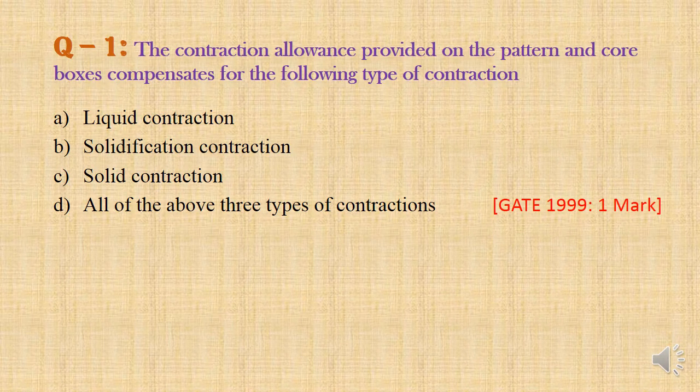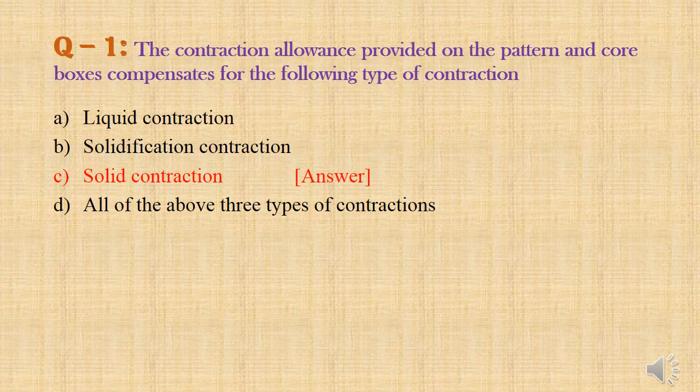Question 1: The contraction allowance provided on the pattern and core boxes compensates for which type of contraction? Option A: liquid contraction. Option B: solidification contraction. Option C: solid contraction. Option D: all of the above. Contraction allowance is the same as shrinkage allowance. Liquid shrinkage and solidification shrinkage are compensated by the riser. Only solid shrinkage is compensated by the pattern allowance. Answer: Option C — solid contraction.